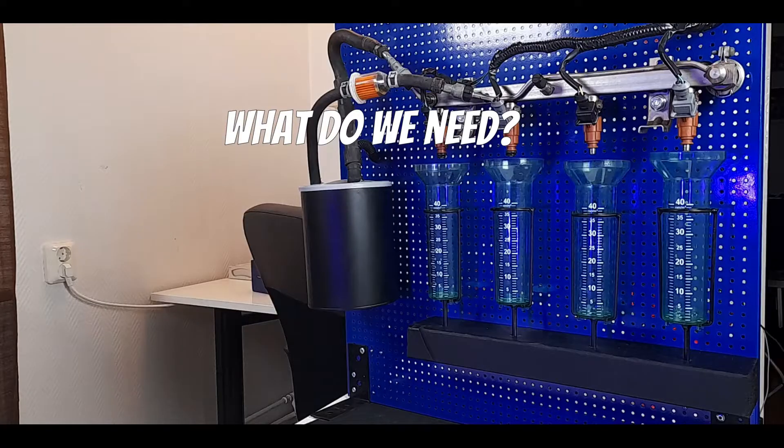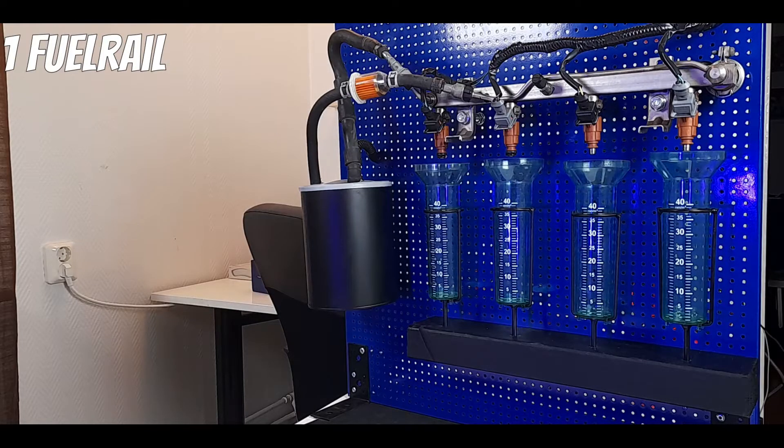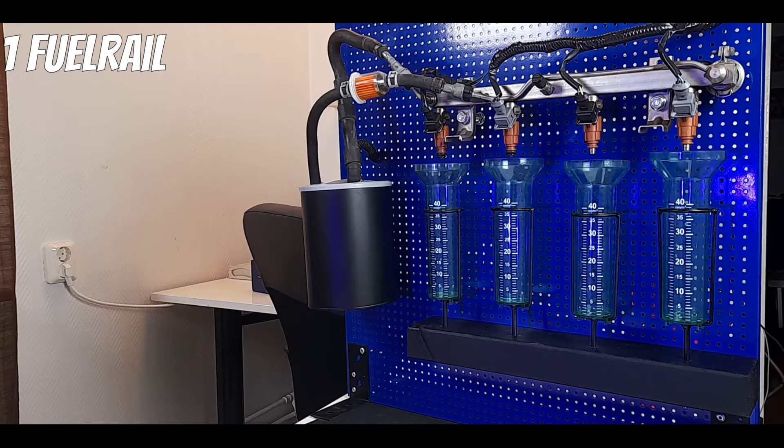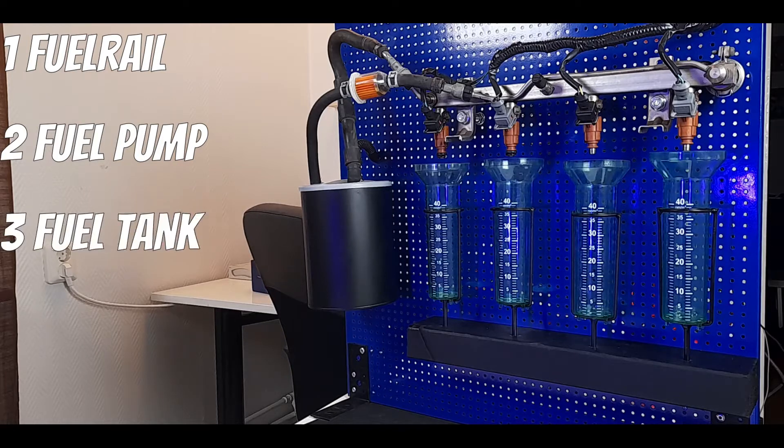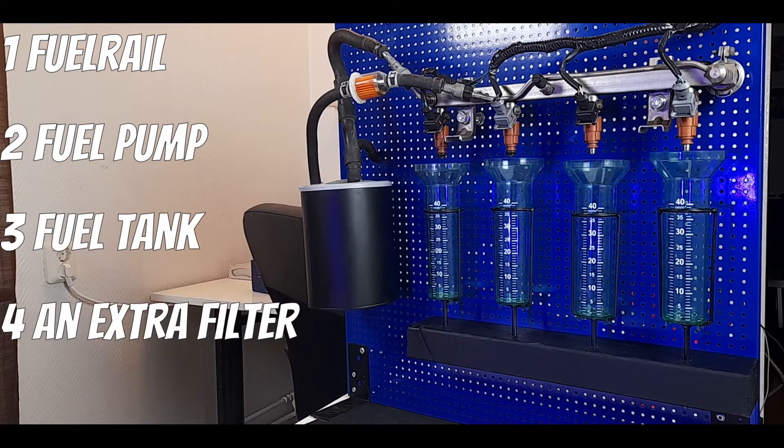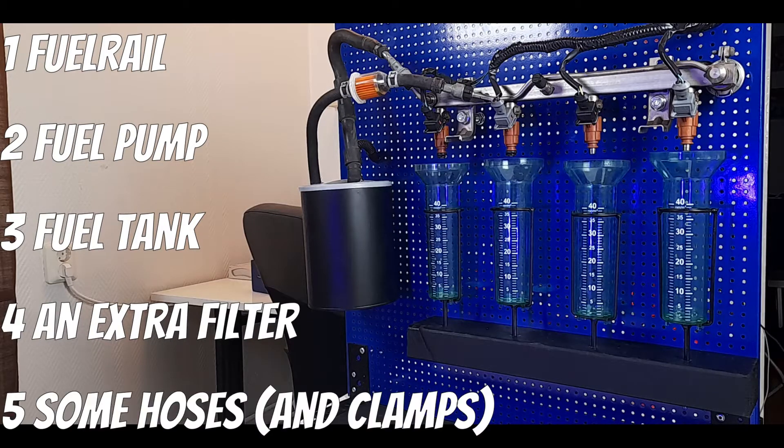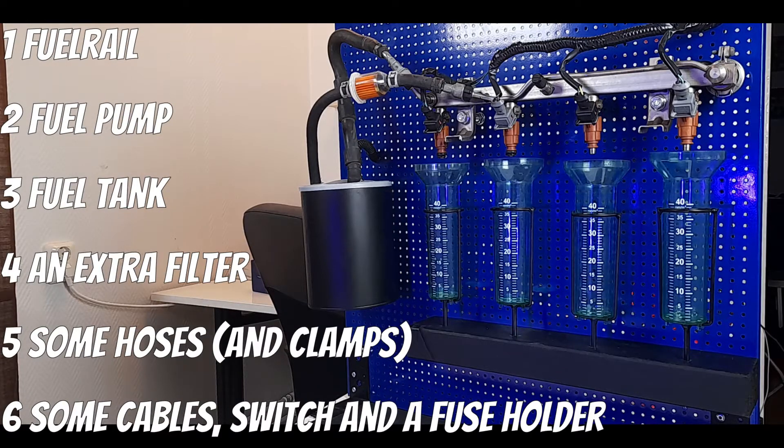So what do we need to make this possible? First of all we need a fuel rail. I went for one with Bosch connectors because that's the most common injectors I encounter. Second we need a fuel pump, preferably one with a built-in filter, a fuel tank, an extra fuel filter for the petrol that is going back into our fuel tank, and then we need some hoses to fit all this together and some cables.